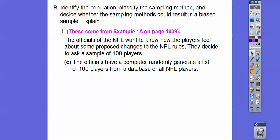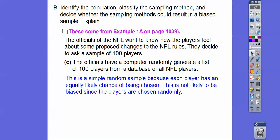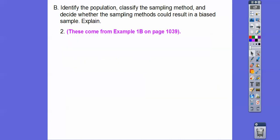Here we go. The officials have a computer randomly generate a list of 100 players from a database of all NFL players. This is a simple random sample because each player has an equally likely chance of being chosen. This is not likely to be biased since the players are chosen at random right here.